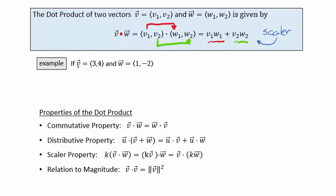For example, if we have the vector v with components 3, 4 and the vector w with components 1, negative 2, then the dot product of v and w would be calculated as 3 times 1, the product of the x components, plus 4 times negative 2, the product of the y components, and then we would add this together and we would get back negative 5.